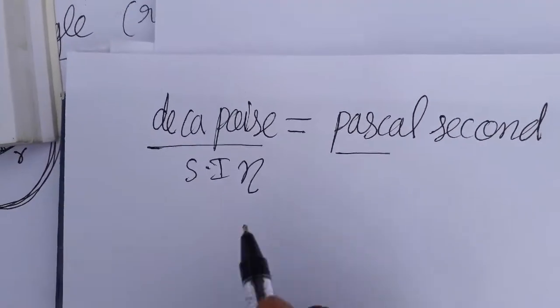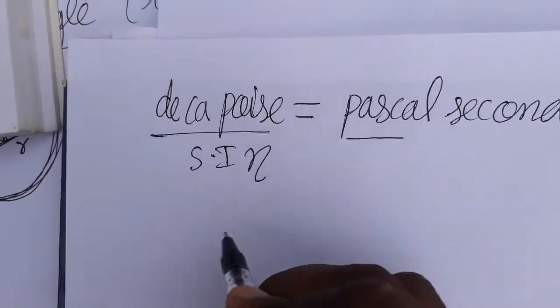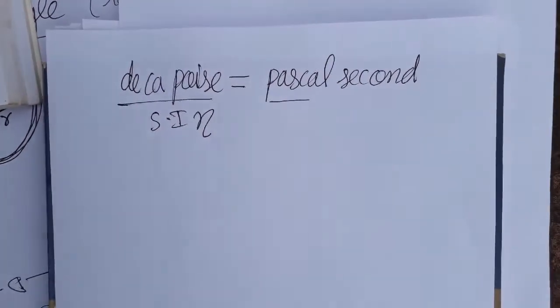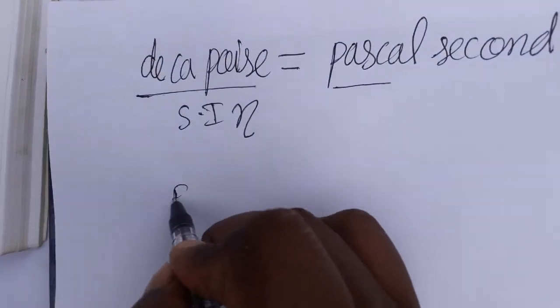What is Decapoise? It is the SI unit of coefficient of viscosity. We are going to prove that it is equal to Pascal into second.